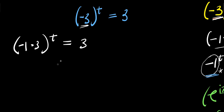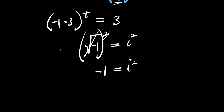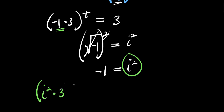Now let's consider the complex logarithm approach. Since the square root of negative one equals i, the imaginary number, squaring both sides gives negative one equals i squared. So we replace negative one here with i squared, giving i squared times three, raised to the power of t, equals three.